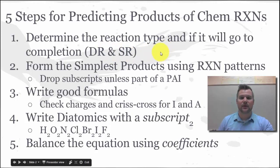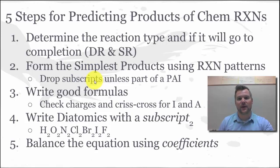After you've determined your reaction type, there are specific reaction patterns that we've talked about in previous discussions. You need to use those reaction patterns and form the simplest products, which means you're going to drop subscripts unless they are part of a polyatomic ion like nitrate NO3 or phosphate PO4.